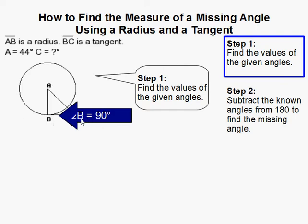If we know that this is a radius and this is a tangent, that means it forms a 90 degree angle here. So that's where I get angle B equal to 90 degrees.